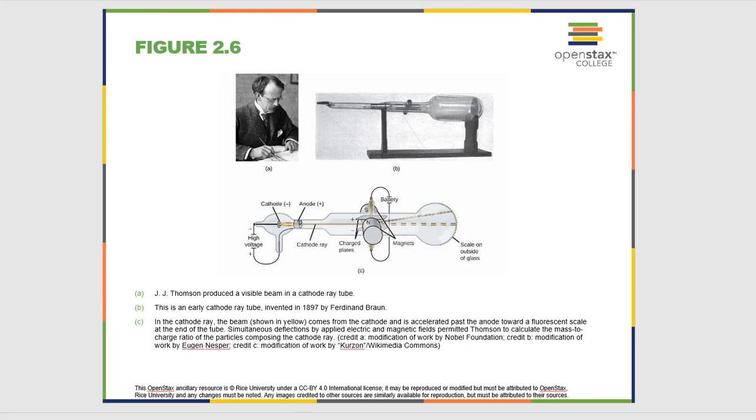In the previous section we talked about the subatomic particles, namely protons and neutrons found in the nucleus, and electrons in a cloud around the nucleus that make up an atom.